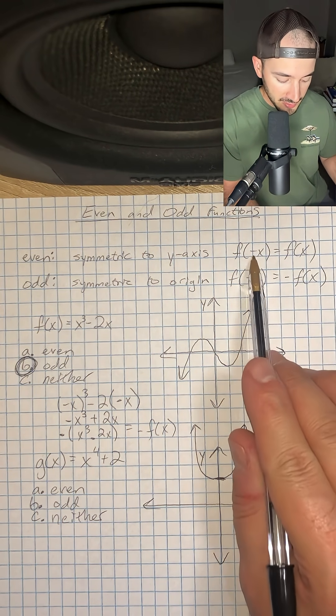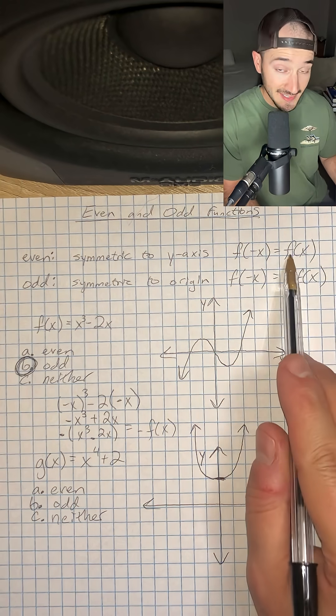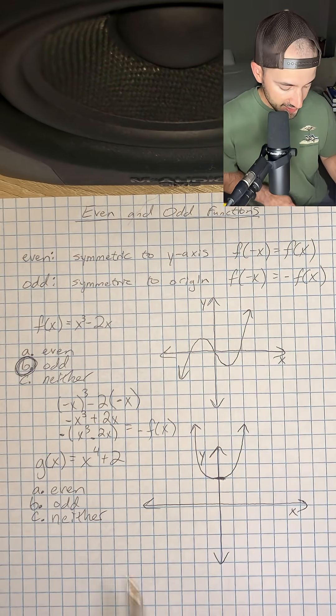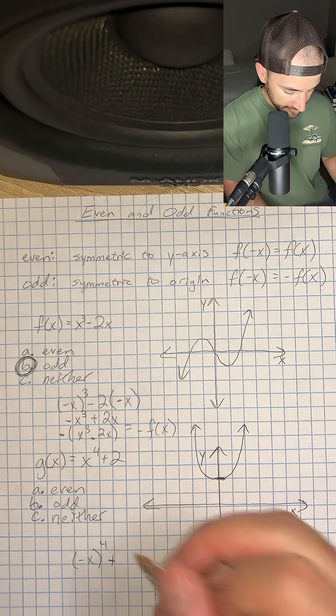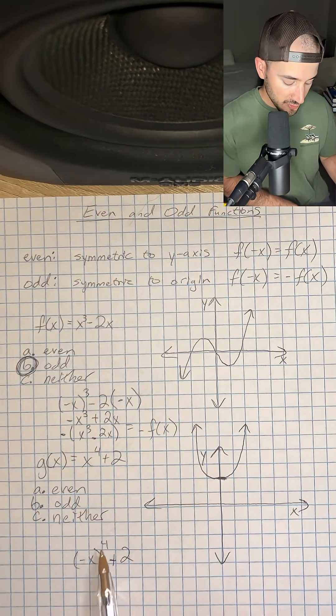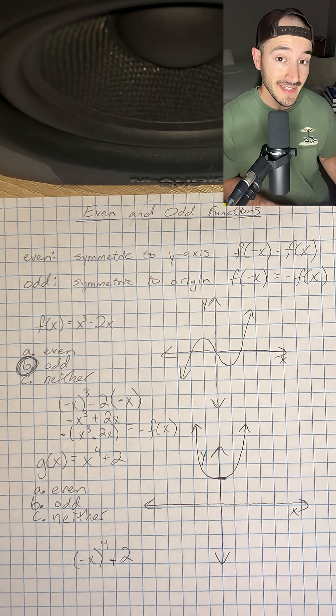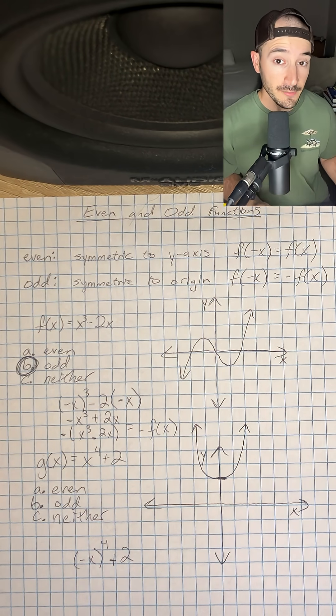That means if we plug in negative x, we should just get the same function. So let's test that. We're going to do negative x to the fourth power plus 2. Negative x to the fourth power, anytime we put something to an even power, it's going to make that term positive.